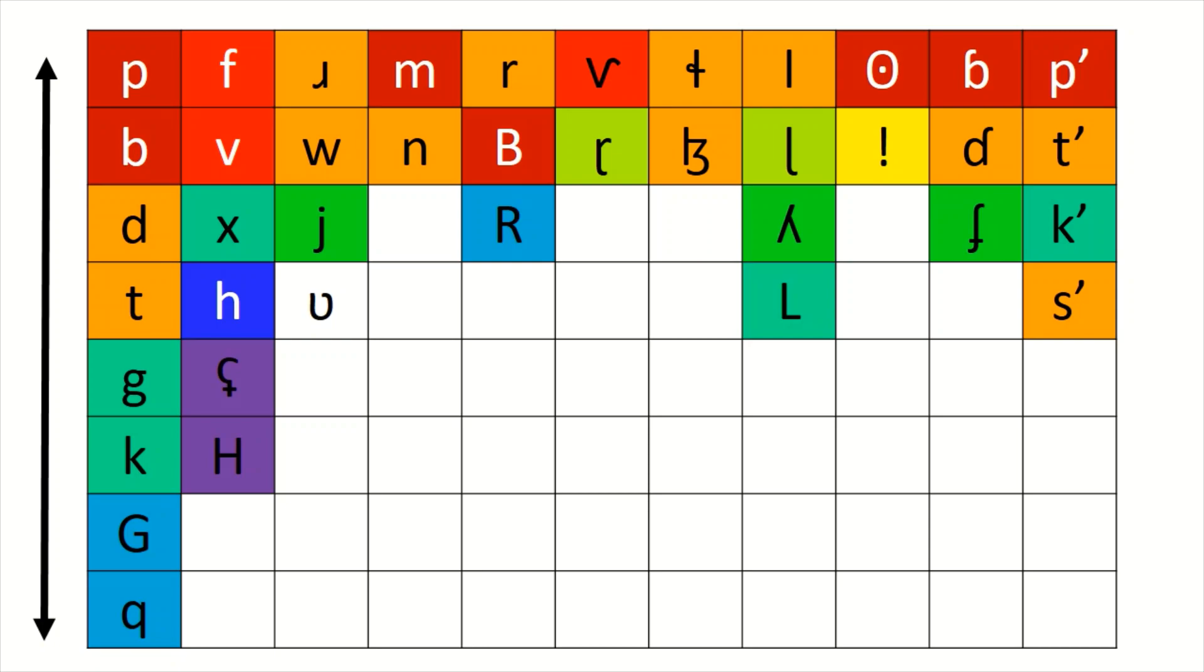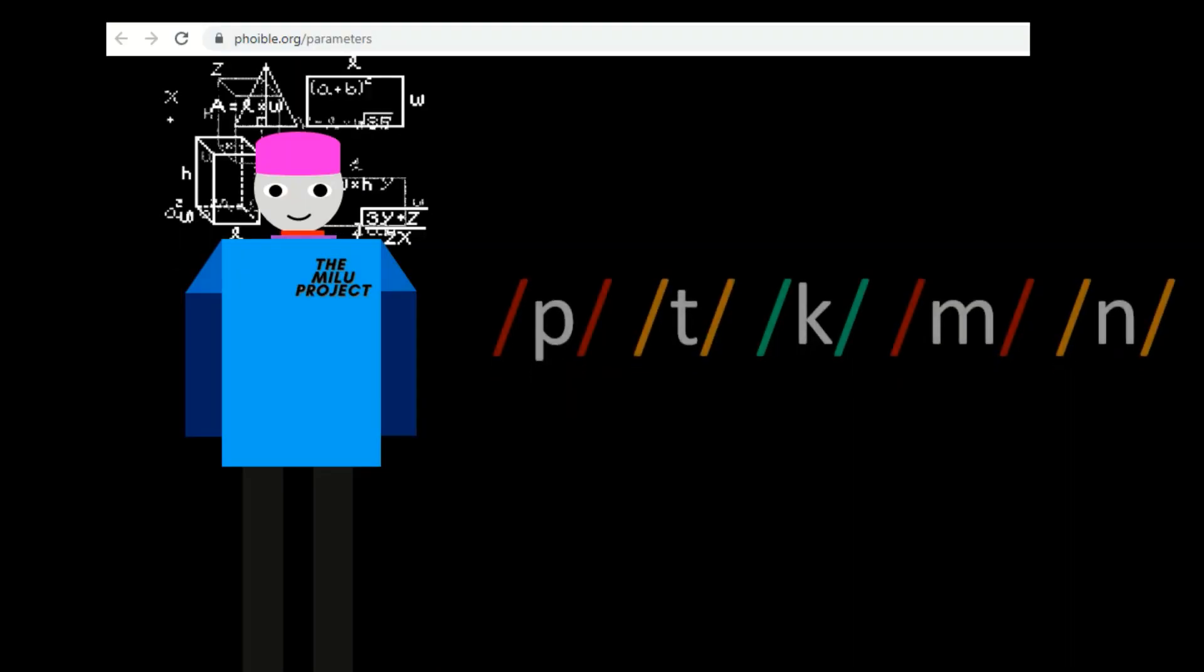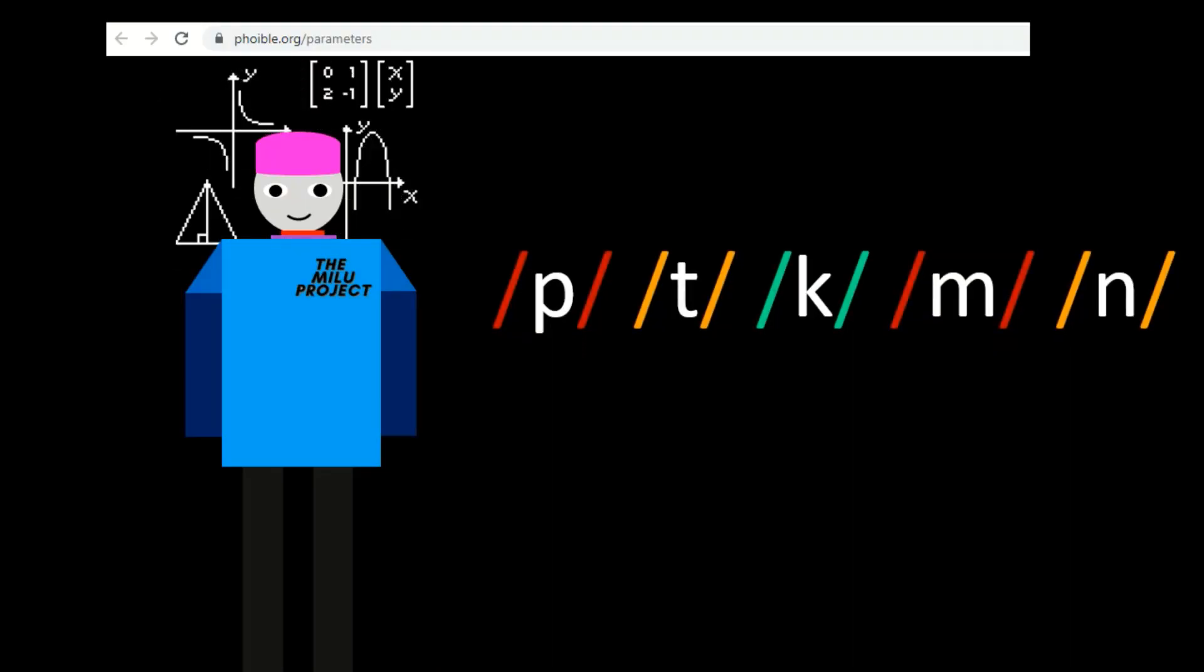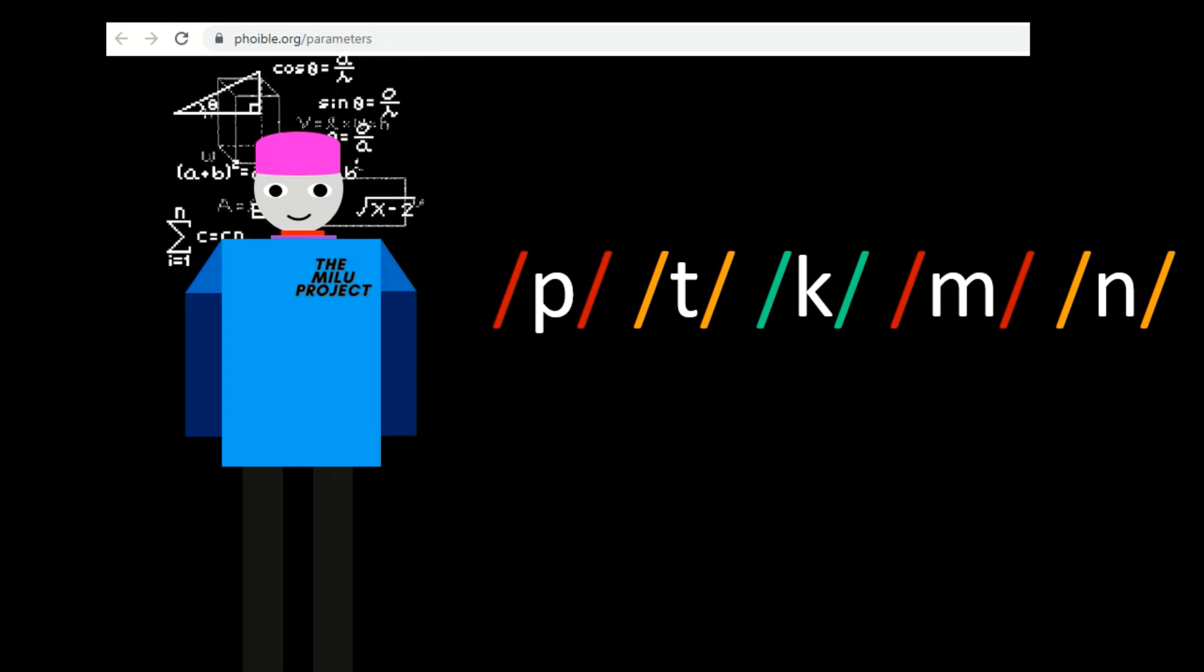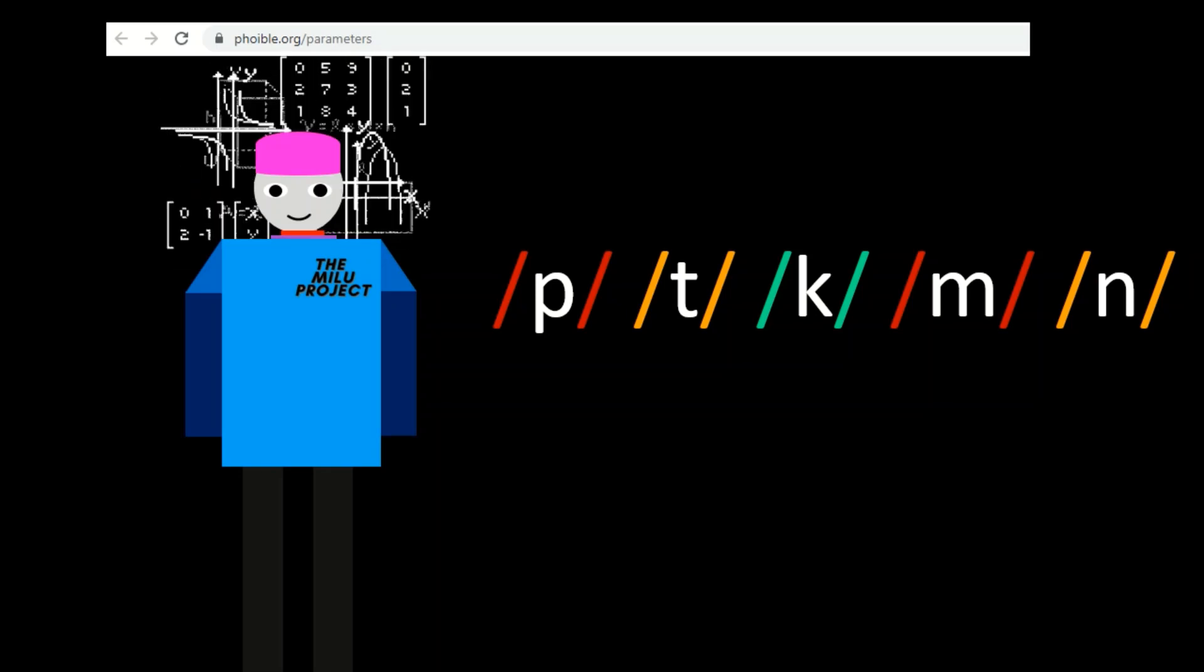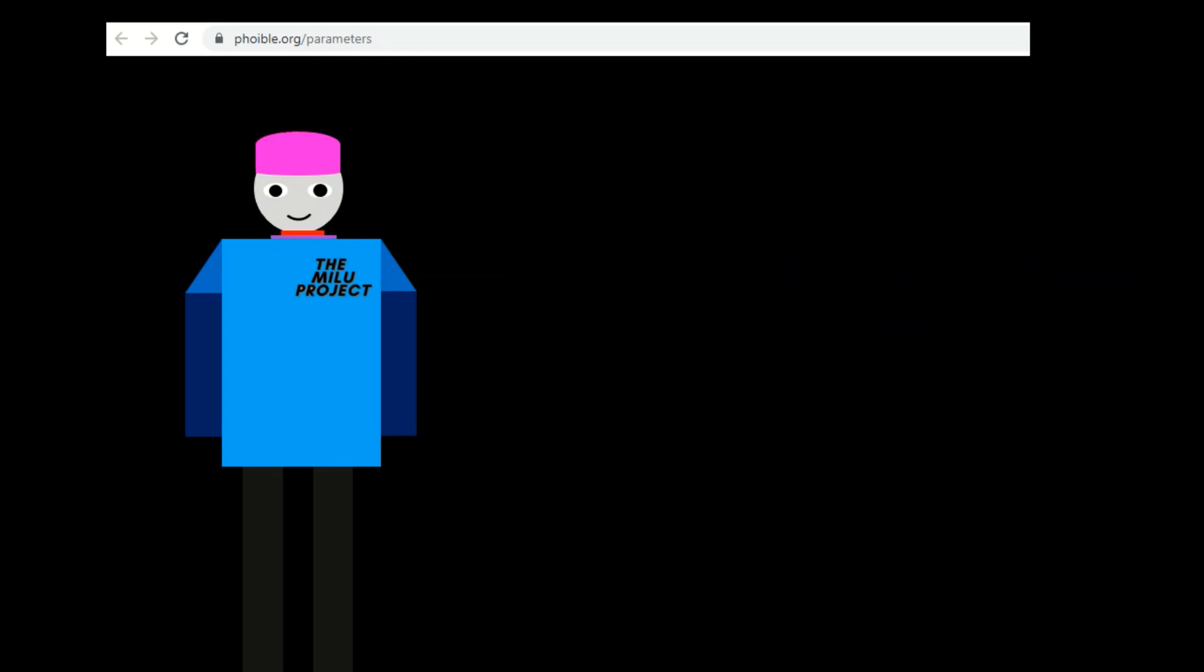Anyway, for the frequencies, I used an extremely useful website called Foible. Link in the description. And I was able to deduce that these sounds, p, t, k, m and n, are the most popular consonants, occurring in these proportions.